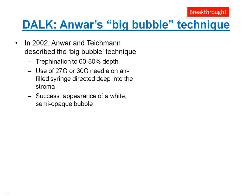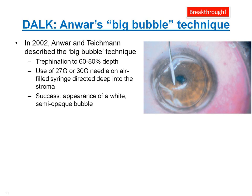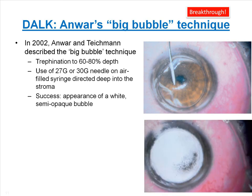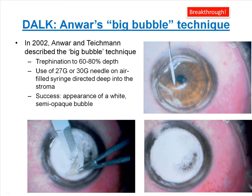In 2002, Anwar described the big bubble technique in which trephination to 60% or 80% corneal depth was performed, followed by use of a 27- to 30-gauge needle to inject air to obtain a bubble, seen by the stroma turning semi-opaque, or white.